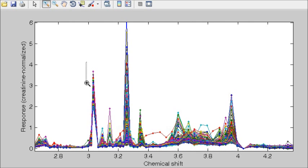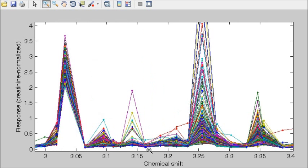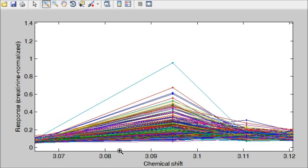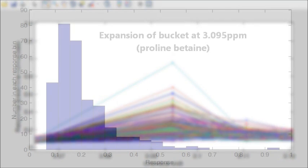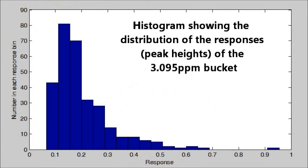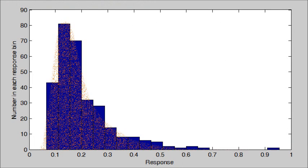By expanding the x-axis scale we can examine the individual responses in each bucket more closely. For example, the bucket of chemical shift 3.09 parts per million is attributed to proline betaine, a compound found in plants, especially citrus fruits. It can be seen that the response values are not normally distributed. When they are represented as a histogram, the skewed nature of the distribution is clear.